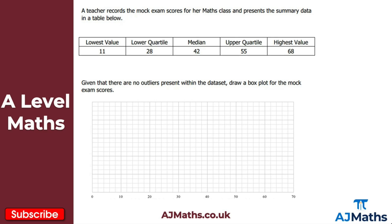Looking at question one: a teacher records the mock exam scores for her maths class and presents the summary data in a table. There are no outliers in the data set, and we're asked to draw a box plot for the mock exam scores. Working left to right, the lowest value is 11 — on the scale going up in twos, that's halfway between 10 and 12.